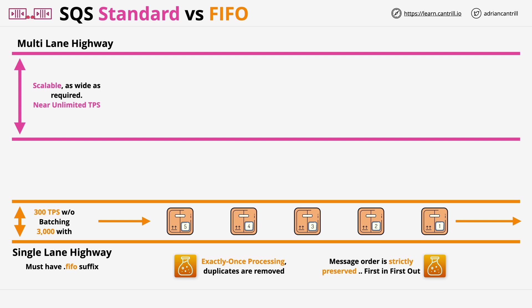FIFO queues are great for workflow-based order processing and command ordering — for example, if a system administrator is entering commands into a processing system and you need the order of those commands maintained, FIFO queues are ideal. They're also well suited for sequential, iterative price adjustment calculations in sales order workflows.